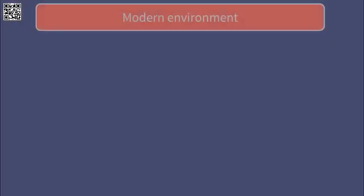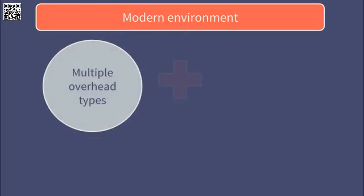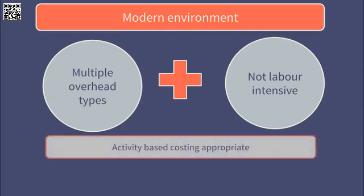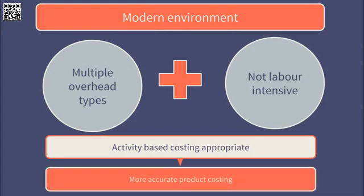In the modern environment, overheads relate to product design and research, customer service, and other product-sustaining activities. Absorbing overheads based on production volume is no longer as relevant as it once was. This supports the use of activity-based costing, resulting in a more accurate reflection of the overhead attributable to each product and thus a more accurate product cost.